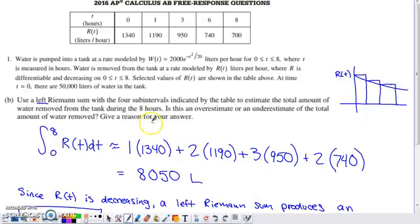It says, are you looking at either an overestimate or an underestimate? Well, if you think about it, this R(t) function, they tell us in the problem statement that it's decreasing, right?